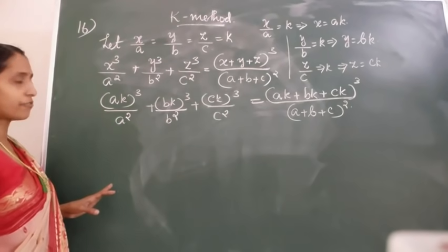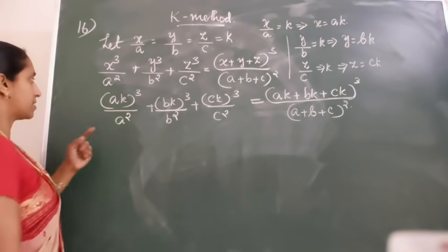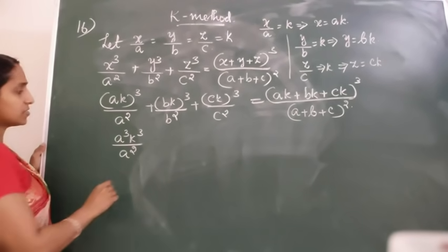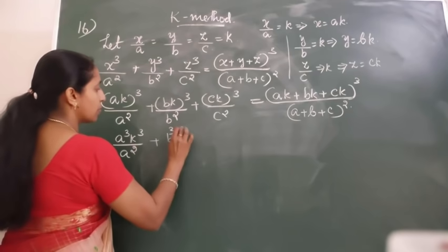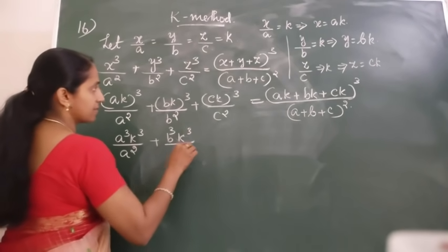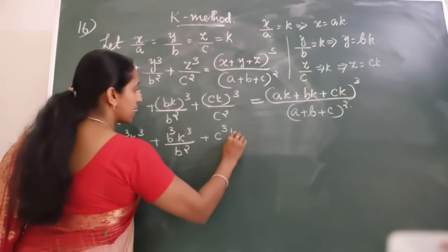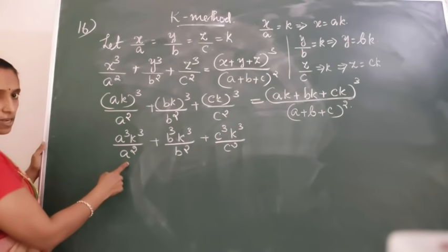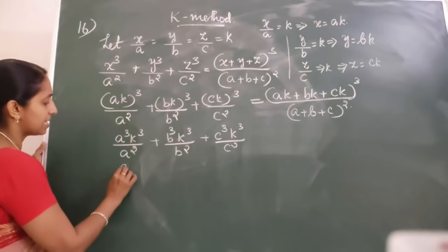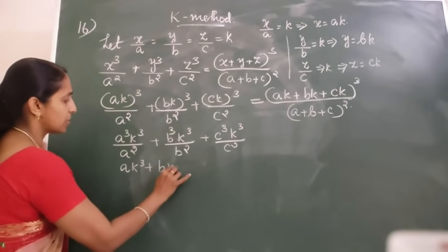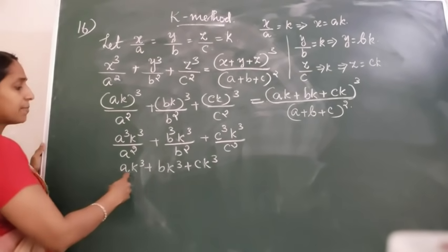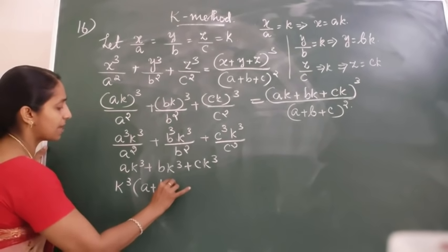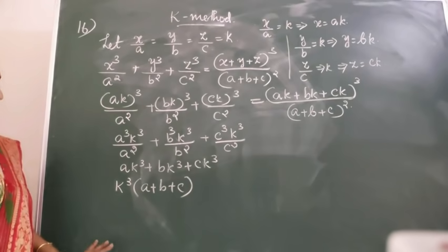Now you are going to simplify it. You will get A cubed K cubed upon A squared, plus B cubed K cubed upon B squared, plus C cubed K cubed upon C squared. A cubed and A squared will cancel, so you get AK cubed plus BK cubed plus CK cubed. Among these three you can take K cubed common, and remaining is A plus B plus C. This is your LHS.